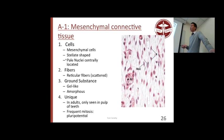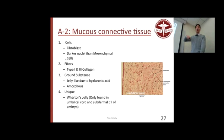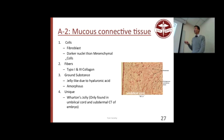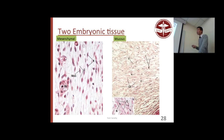Mucous CT — Wharton's jelly — is found only in the umbilical cord and subdermal connective tissue of embryos. You see fibroblasts instead of mesenchymal cells here. Fibroblasts are centrally located, elongated, and star-shaped, making type 1 and type 3 collagen. Areolar tissue is a mess — you see all types of fibers and all types of cells. You can differentiate between areolar tissue and other types by what's present.